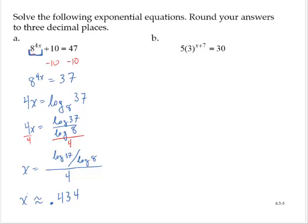Exercise B. 5 times 3 to the x plus 7 is equal to 30. So again, I want to isolate the exponential part. The exponential part is being multiplied by 5. I will divide by 5, yielding 3 raised to the x plus 7 power is equal to 6.